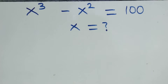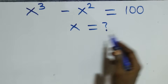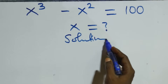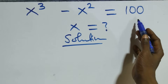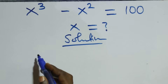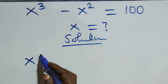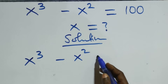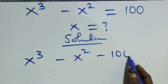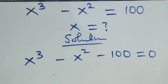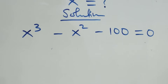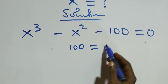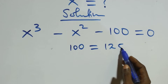Hello, you are welcome. How to solve this nice exponential equation. From here, we can take terms to the left side and what we have becomes x cubed minus x squared minus the constant term, then equals to zero.